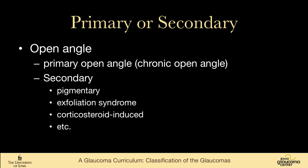For open angle glaucoma, primary open angle glaucoma — sometimes called chronic open angle glaucoma — is the most common glaucoma in the United States. But there are many secondary open angle glaucomas, including pigmentary glaucoma, exfoliation syndrome, corticosteroid-induced glaucoma, etc.